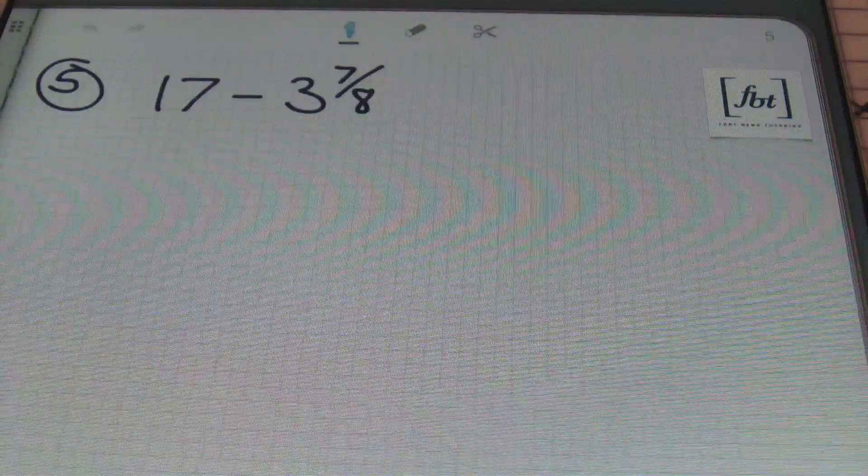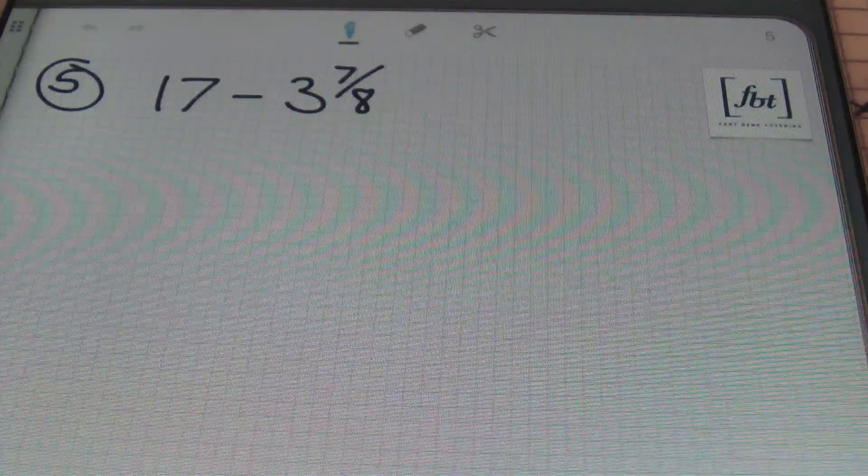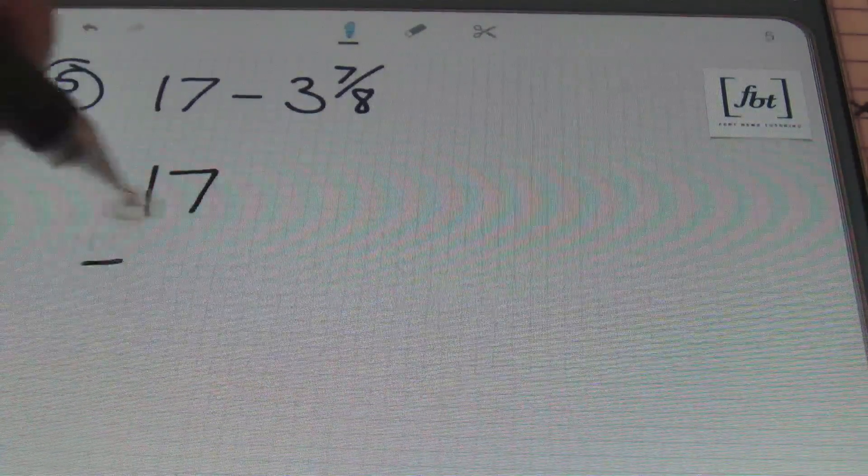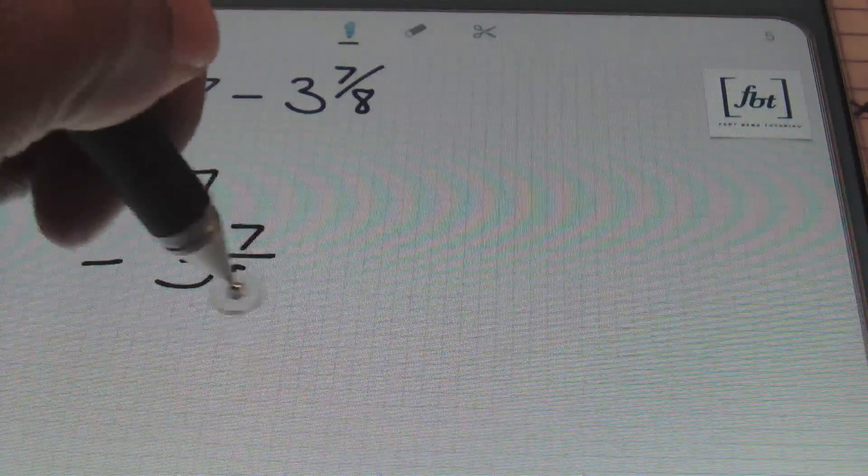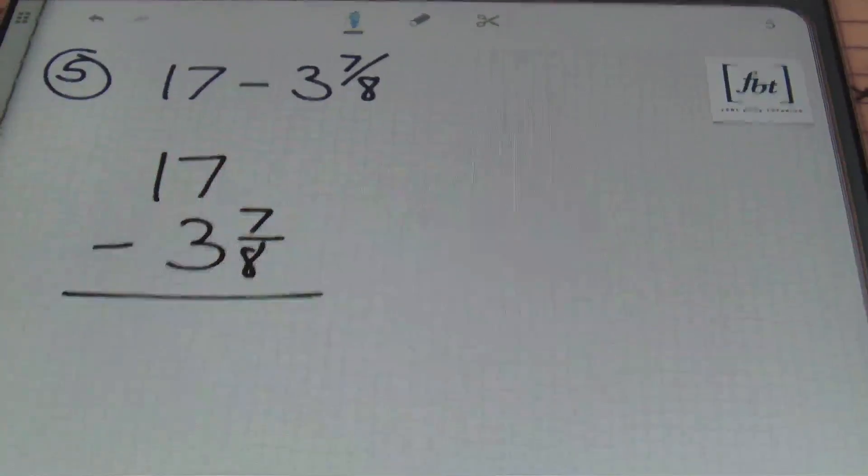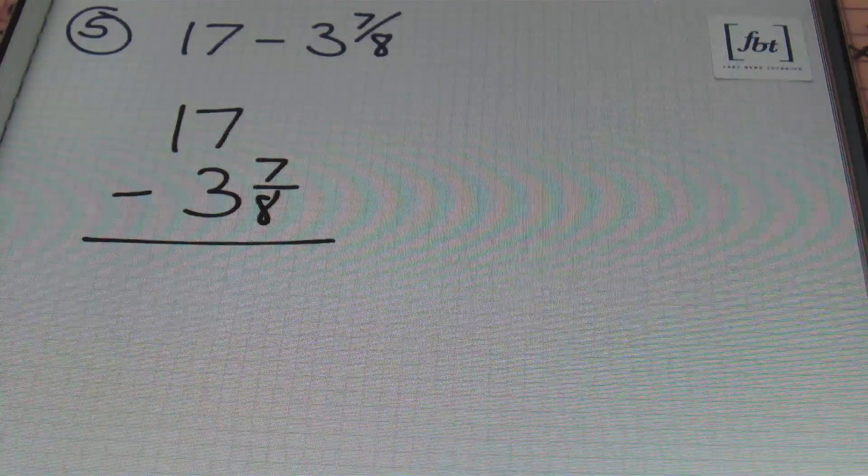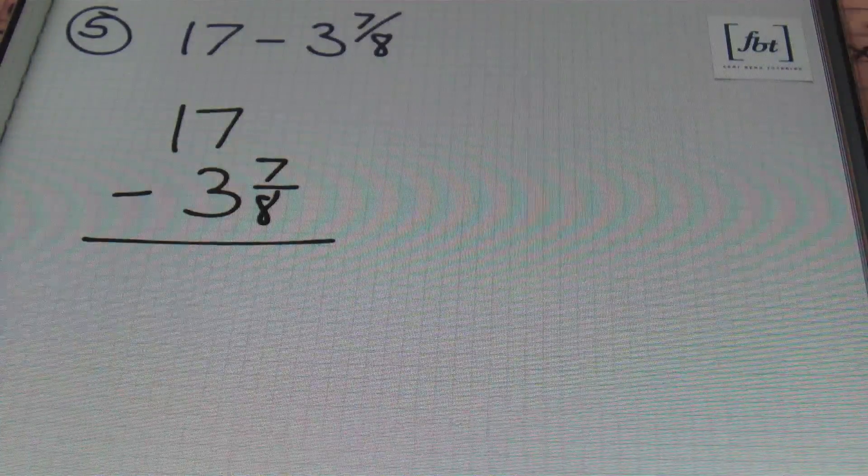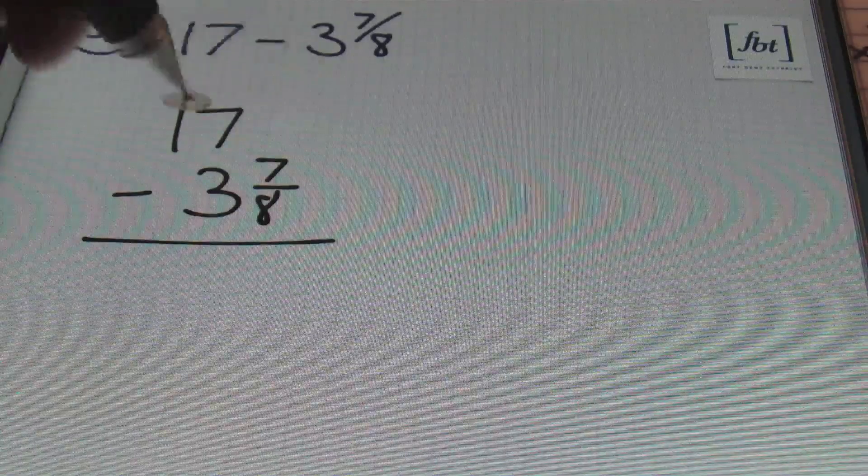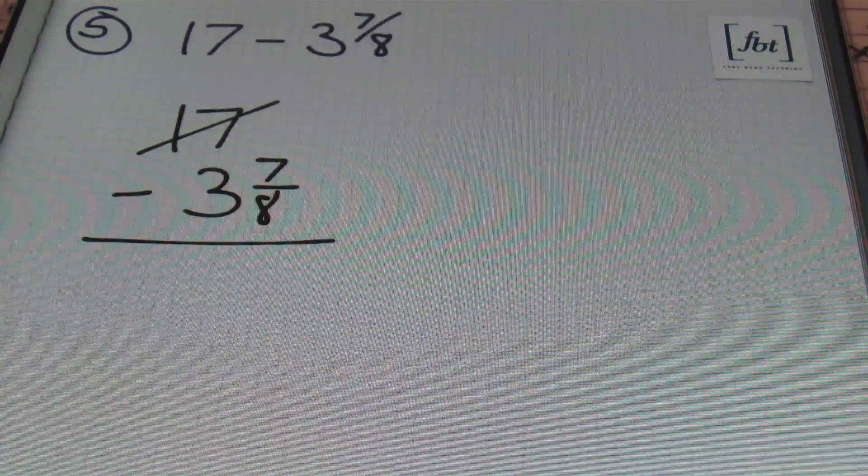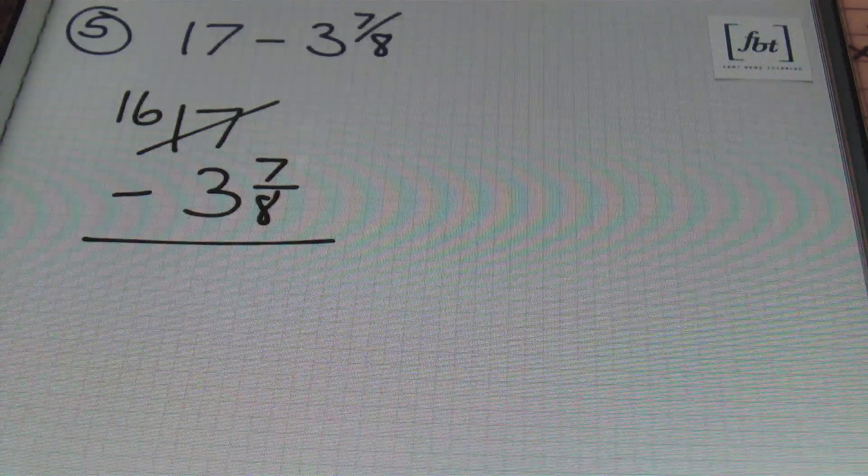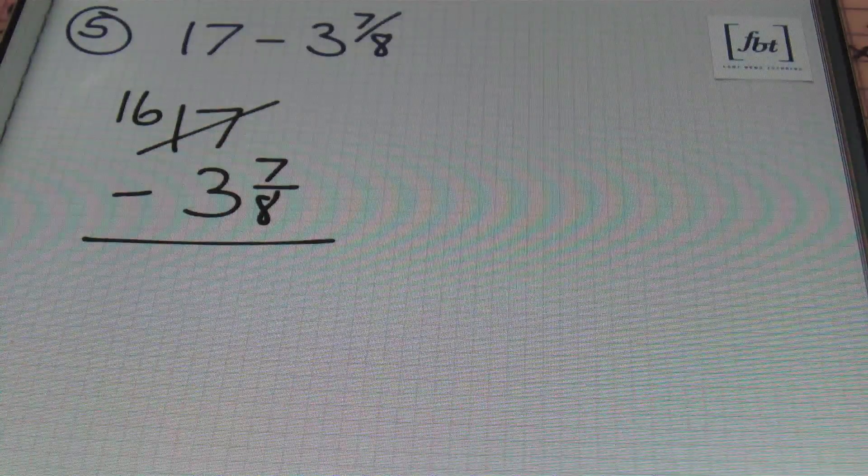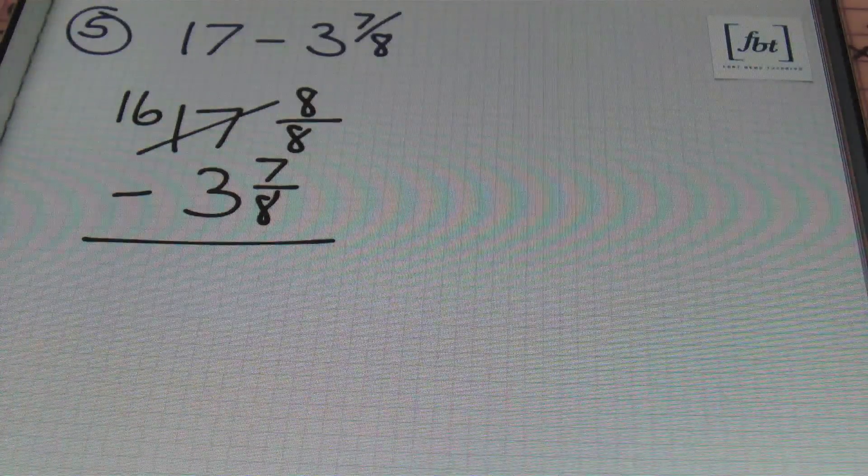In problem number 5, ladies and gentlemen, I have 17 minus 3 and 7 eighths. So I'm going to stack this. I have 17 minus 3 and 7 eighths. Now notice, ladies and gentlemen, I'm trying to subtract a fraction from a value that doesn't have a fraction. Well, in this case, ladies and gentlemen, it's appropriate to borrow from the 17. So what I'll do is I'll say that I'll borrow 1 from 17 to make this a 16. And remember, we'll use that 1 in the same form of the denominator over itself. So it's going to be 8 over 8.